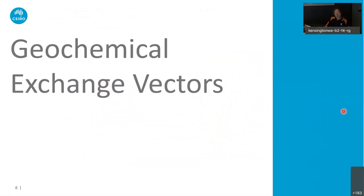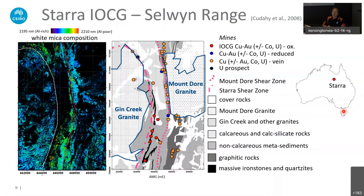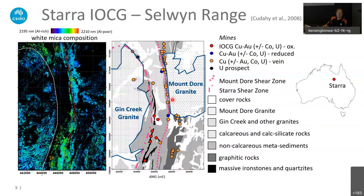Moving on to geochemical exchange vectors. I think one of the best and most straightforward examples is the Starra IOCG from the Montaise-Laia region of the Gawler Craton belt. We did work on this area around 2008 when we published a report. In the Starra area or the Selwyn Range, we have a number of IOCG deposits marked by red dots on the map, along with copper-gold and uranium prospects. In the western part, close to the iron stones, we've got lots of IOCGs, whereas in the eastern part along the Mount Dore shear zone there are copper deposits.